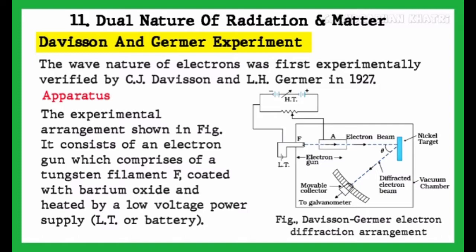The wave nature of electrons was first experimentally verified by C.J. Davison and L.H. Germer in 1927.